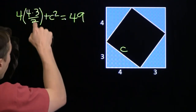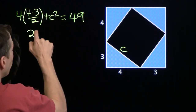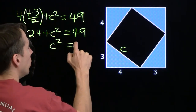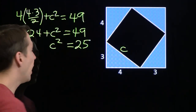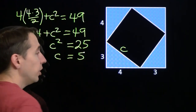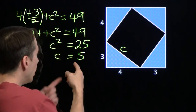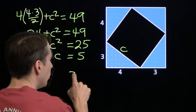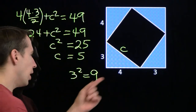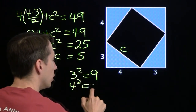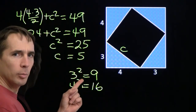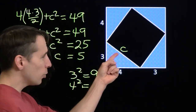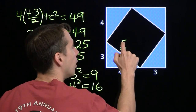Each of the right triangles has legs of length 3 and 4, so the area of each is 4 times 3 divided by 2 — product of the legs divided by 2. We're going to call the hypotenuse C, so the area of that square in the middle is C squared. Adding up all the pieces has to equal the whole: 4 times 3 is 12, divided by 2 is 6, times 4 gives us 24 plus C squared equals 49. Subtract the 24 and we get C squared is 25, so C is just 5. Now, look closely: C squared is 25, and 3 squared is 9, 4 squared is 16, and 9 plus 16 is 25.